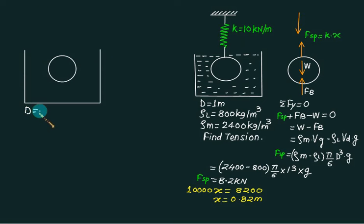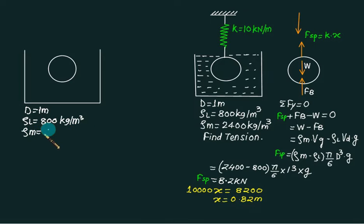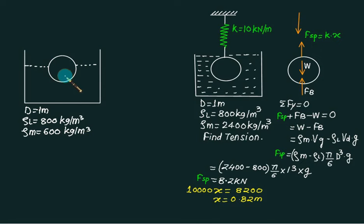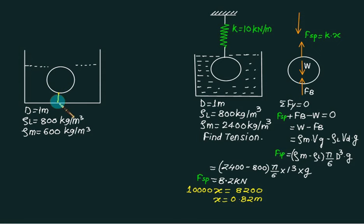Consider one more problem: diameter D = 1 m, density of liquid = 800 kg/m³, and material density = 800 kg/m³. Since the density of the material equals the density of the liquid, or is less, the buoyant force will exceed the weight and the object will try to rise to the free surface. To keep it completely submerged, a string is tied from the bottom. We assume it is completely submerged and develop the FBD.